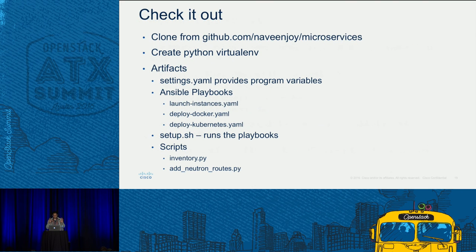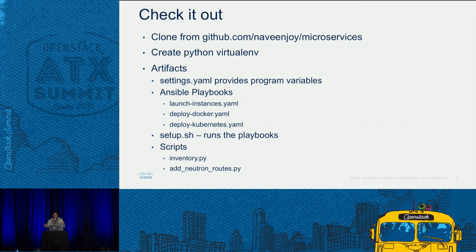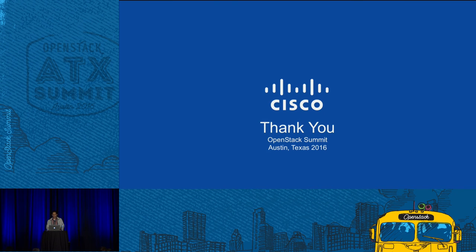We are just out of time, so my last slide: you can clone all of this from my GitHub repo at 'microservices'. Create a Python virtual environment, run the playbooks, and there is also a script called setup.sh that ties all of these together — it launches the instances, deploys Docker, deploys Kubernetes, and builds out the entire infrastructure for you. Thank you for coming.